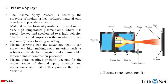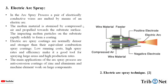Here in this figure, we can see the plasma spray technique. Next one — electric arc spray. In the arc spray process, a pair of electrically conductive wires are melted by means of an electric arc. The molten material is atomized by compressed air and propelled towards the substrate surface.